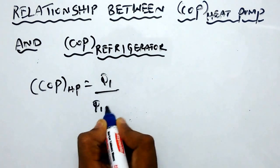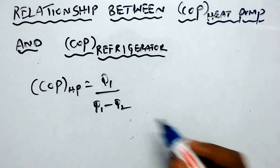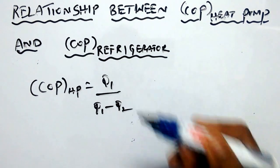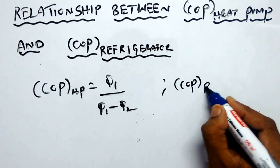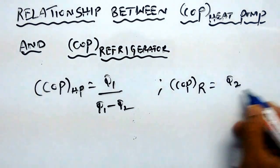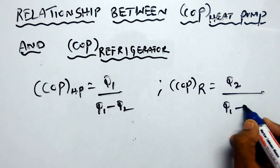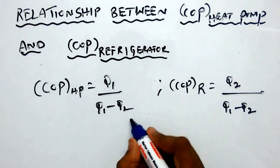heat supplied minus heat rejected. Q2 is the heat rejected and Q1 is the heat supplied. Similarly, COP of the refrigerator is equal to heat rejected Q2 divided by heat supplied minus heat rejected. Let us consider this as equation number one, this is equation number two.